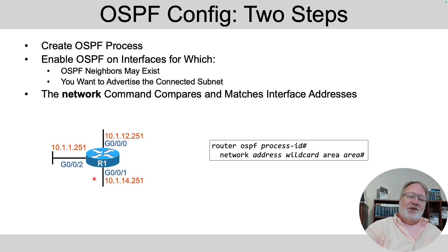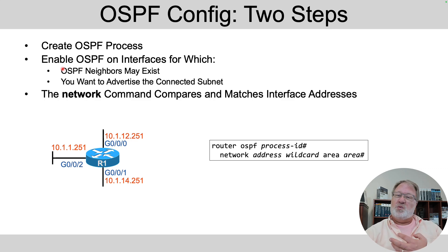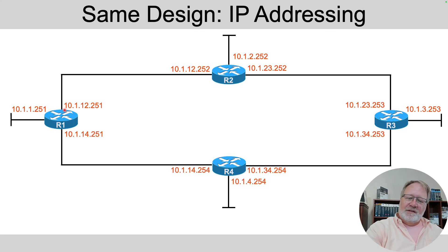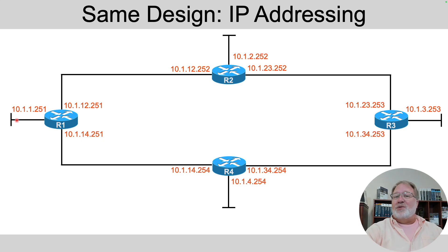So OSPF config has two steps. You create an OSPF software process in each router, and then on each router you enable OSPF on interfaces. There are two types of interfaces: OSPF interfaces on which OSPF neighbors may exist, like links where you know some other router exists, and also if there's no other router but you want to advertise about the connected subnet. R1 on its top link connects to R2, so R1 expects a neighbor and would want to enable OSPF there. Likewise on its bottom link connecting to R4. Your typical case is enabling OSPF on every production interface in your design.